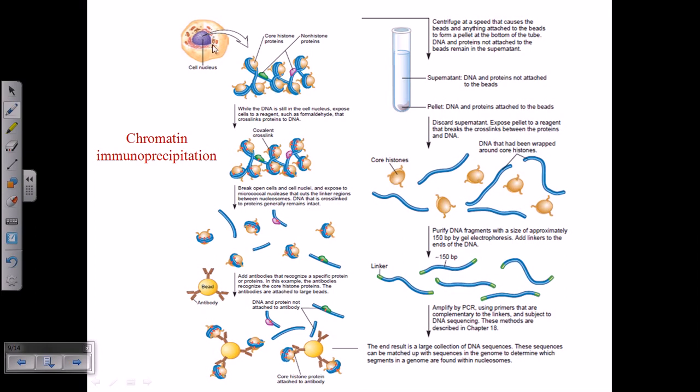The experiment starts by taking out the cell nucleus and chromosome. We need to break the cell open and take the nucleus, extract the chromosome, and then treat it with enzyme.